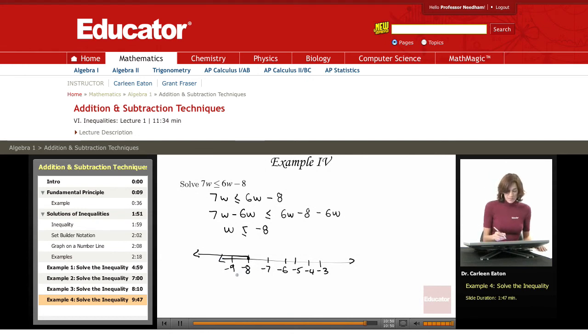I also could use the more formal set notation: W such that W is less than or equal to negative 8. So here are the elements I'm talking about, and here are the restrictions on those elements.